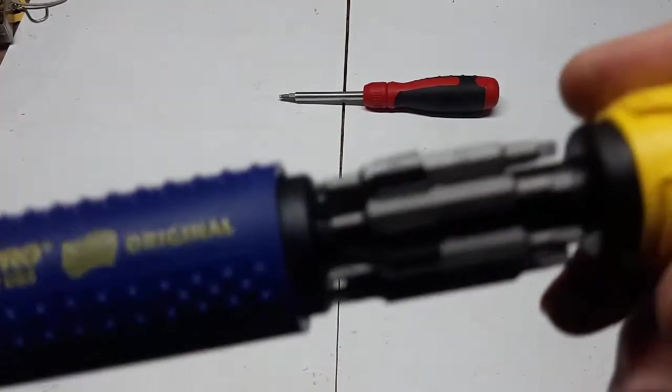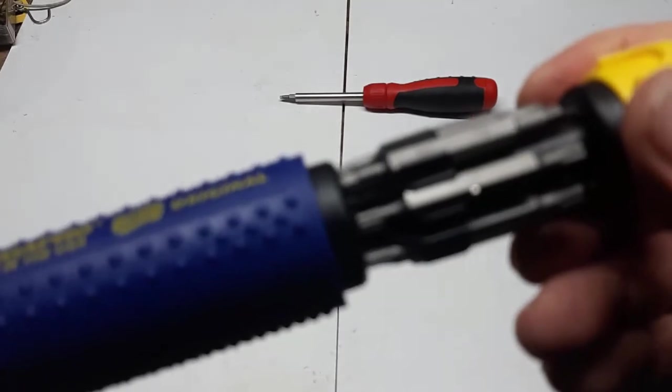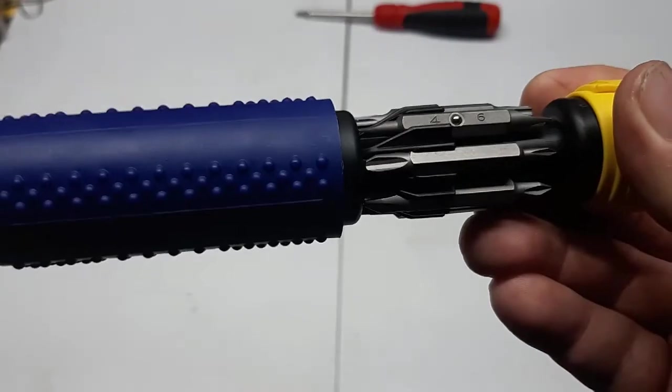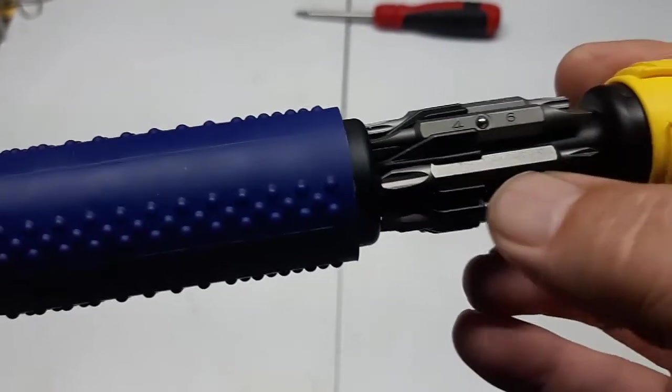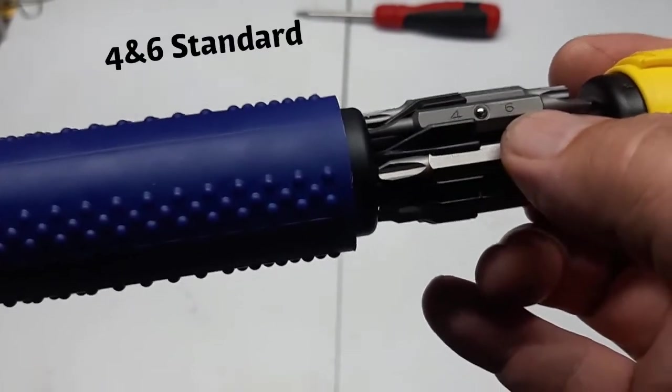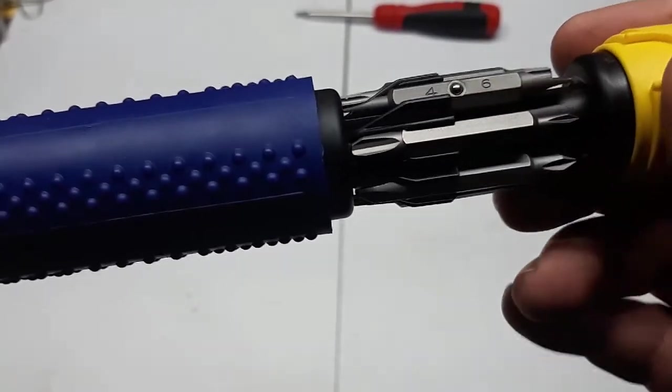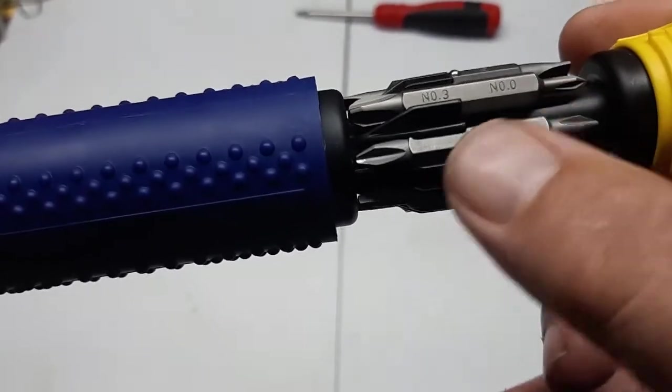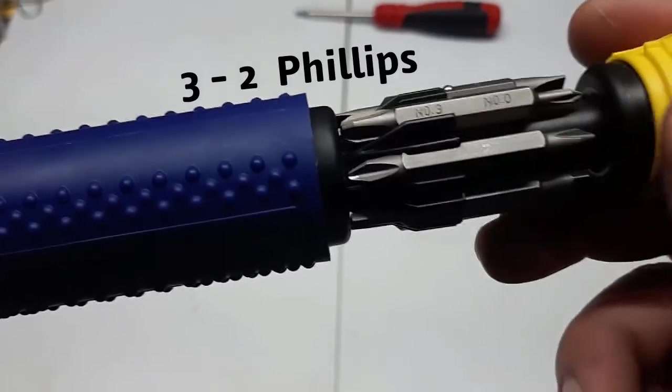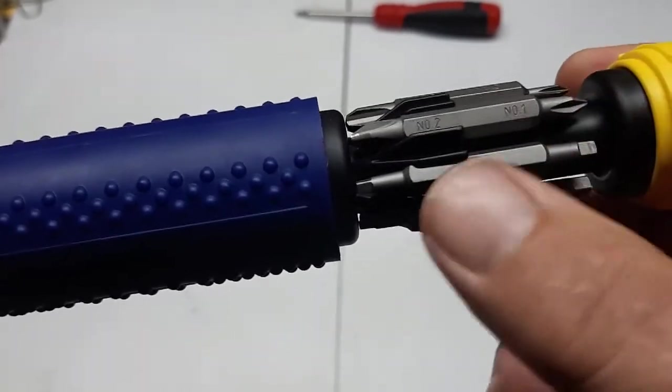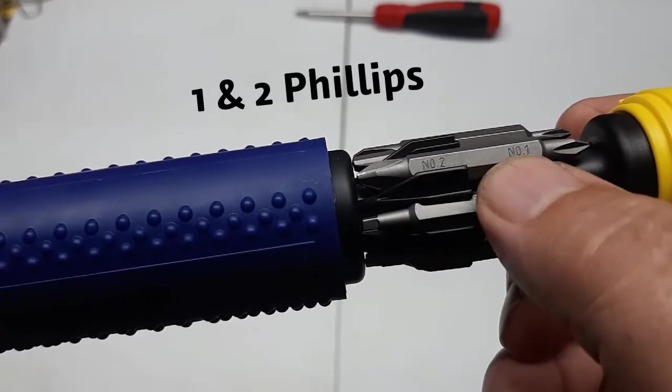Seven bits, double-sided. So the first one is 4 and 6, this is the standard or the slotted bit. This is number 3, number 2 Phillips, number 1, number 2 Phillips.